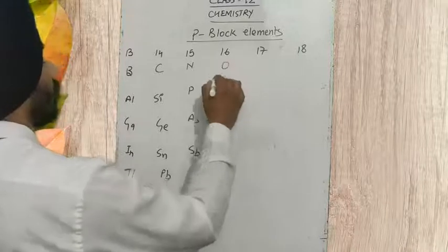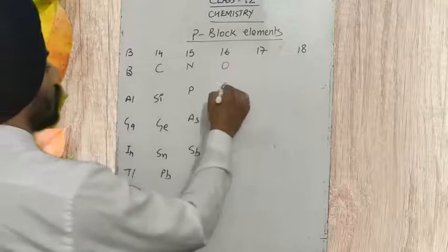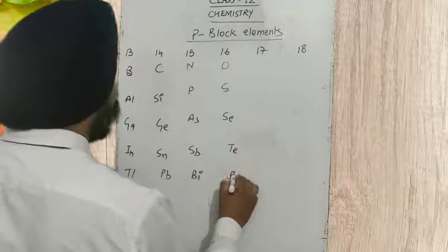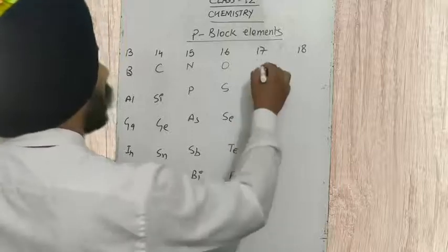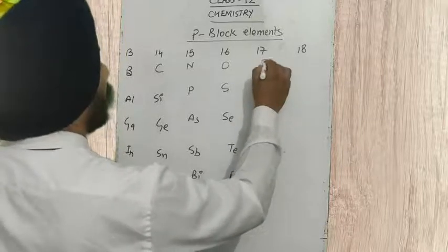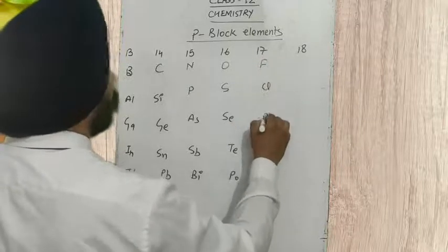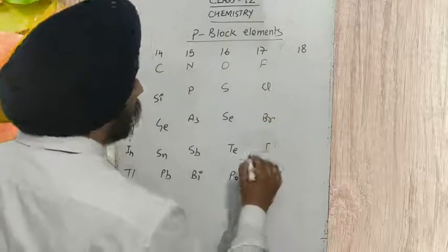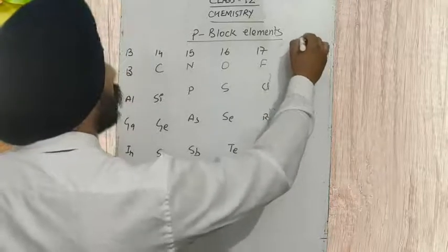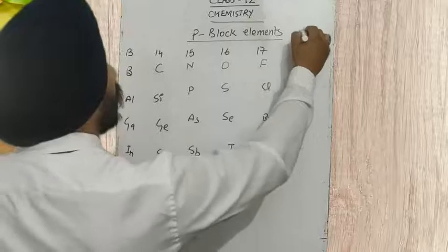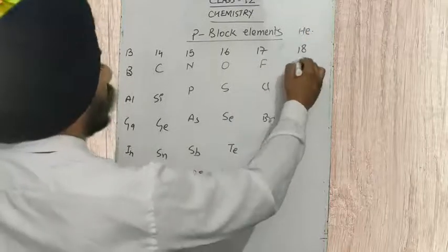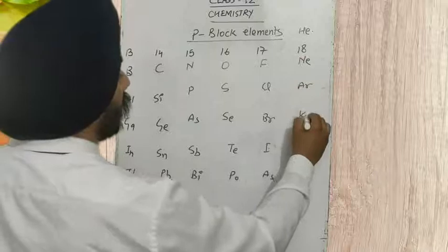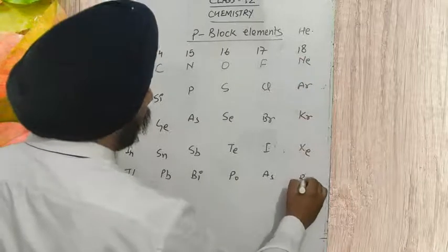Group 16 contains: oxygen, sulfur, selenium, tellurium, and polonium. Group 17 contains: fluorine, chlorine, bromine, iodine, and astatine. And group 18 contains helium written above, then neon, argon, krypton, xenon, and radon.